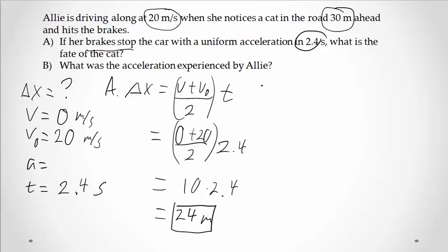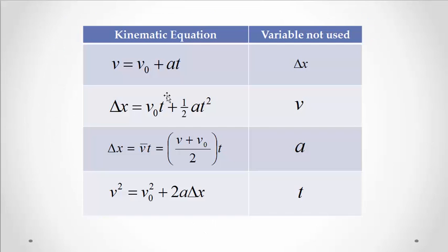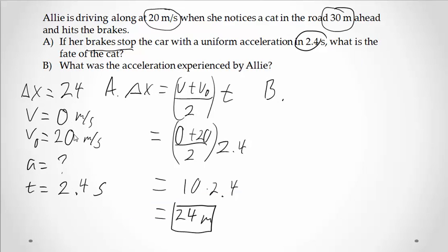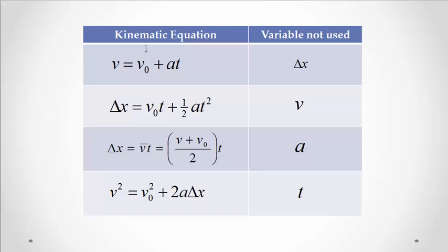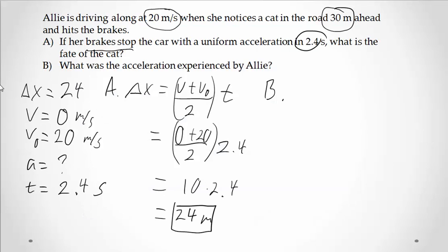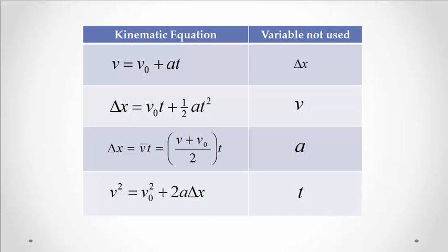So that was part A. Part B says, what is the acceleration experienced by Allie? Now, once I know this quantity here, my delta x, I can go ahead and add that to my list of information here. And now I'm trying to find acceleration. Any equation that has acceleration in it, I can choose any of them. So I would probably just grab the one that is the easiest. So v equals v naught plus at.